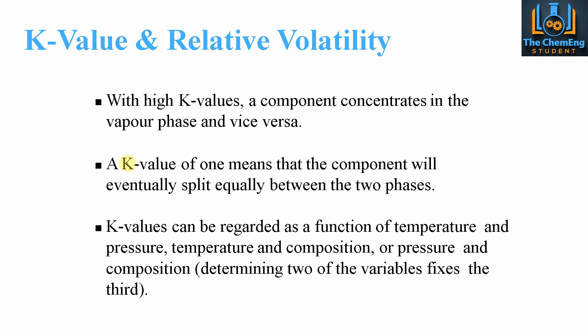A K value of 1 means that the component will split equally between the two phases. So if the K value is 1, we know that it would split equally between liquid and vapor.